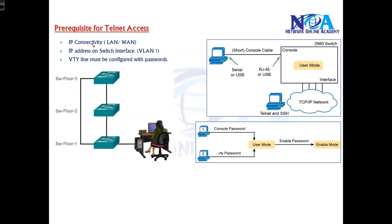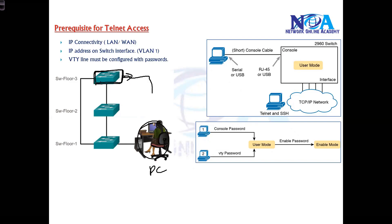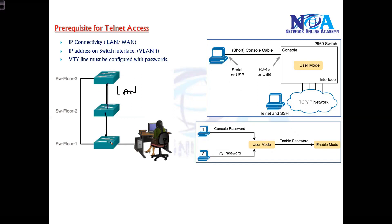Similarly, for telnet we need some prerequisites. The first prerequisite is IP connectivity. IP connectivity means you need to make sure your switch is connected through the LAN. In my example, I want to access a switch on floor three from my PC, so there must be some connectivity — a LAN cable connection. If it's a remote location, there should also be a LAN connection. IP connectivity is essentially your TCP/IP or LAN connectivity.